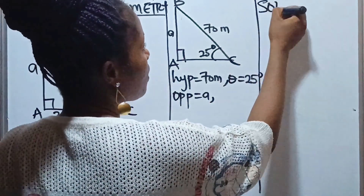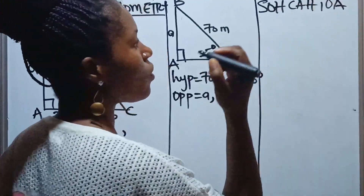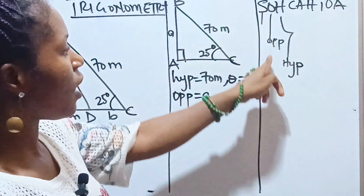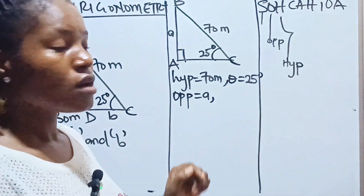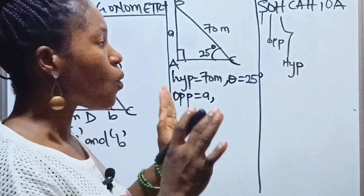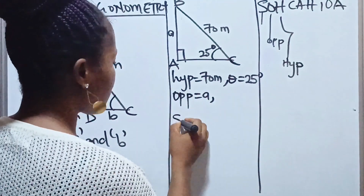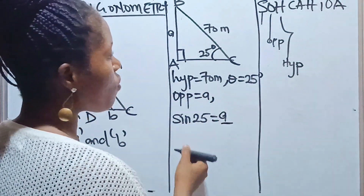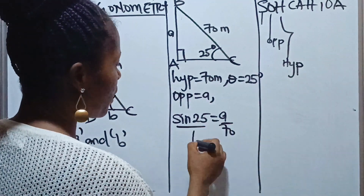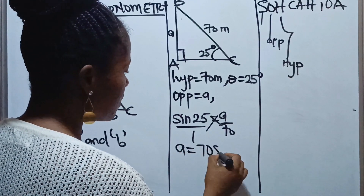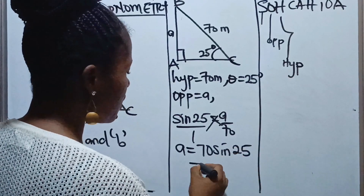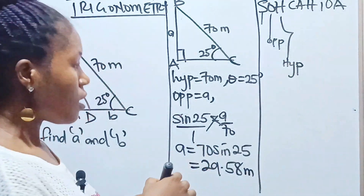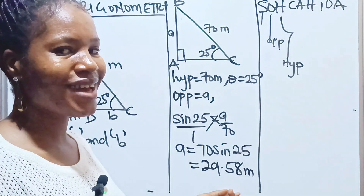Opposite over hypotenuse — from SOH CAH TOA, sine connects opposite to hypotenuse. So we write: sin(25°) = a / 70. Cross-multiplying gives a = 70 × sin(25°), which equals 29.58 meters. So this side is 29.58 meters.